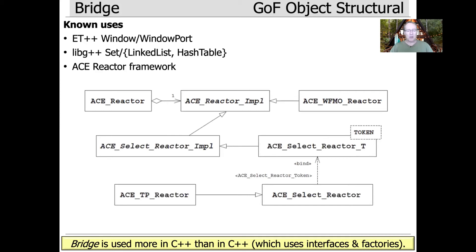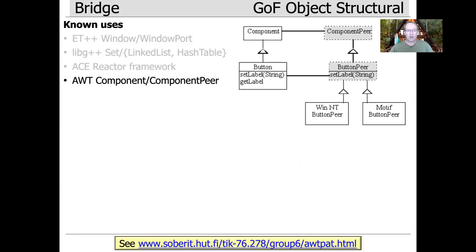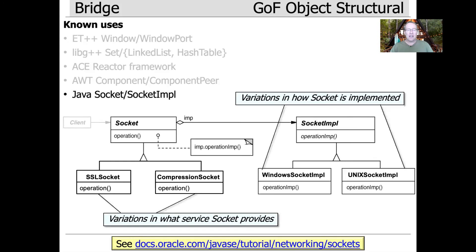Bridge is used more in C++ than in Java. Java tends to use interfaces — which is a language feature somewhat like an abstract class — and factories as the more common approach. However, Java also does use the bridge pattern. There's a use of it in the Java windowing toolkit AWT, and there's a particularly interesting use in Java's Socket class, which is a textbook example of the bridge pattern: the Socket class delegates to whatever underlying operating system implementation of sockets is needed.